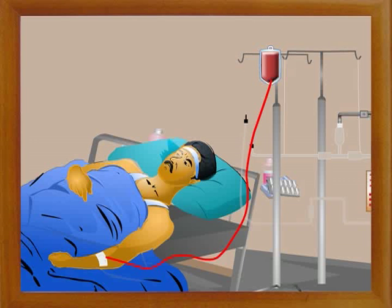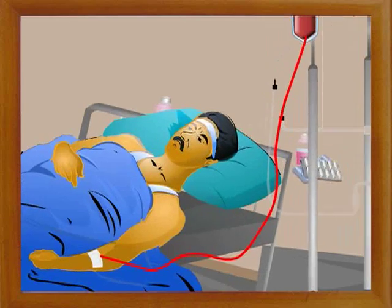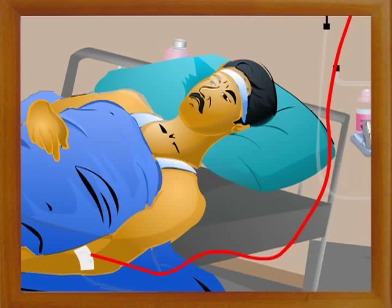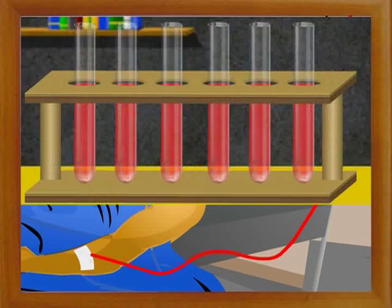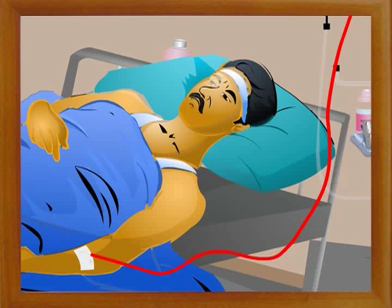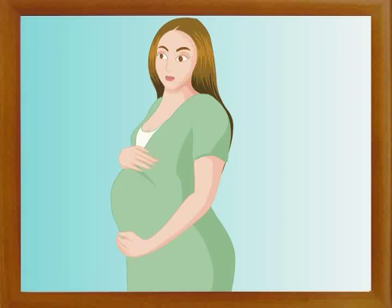The other most probable means of transmission is by blood transfusion with HIV infected blood. In this case, the chances of acquiring infection are 100%.